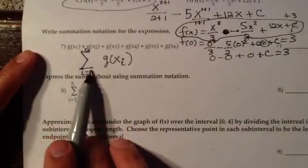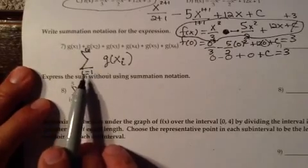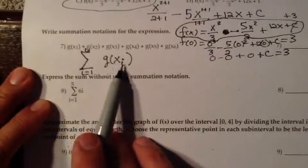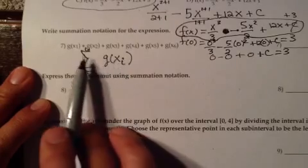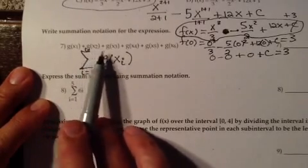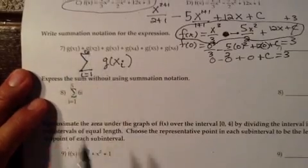Here's the Greek s for summation. i runs from 1 to 6, and we're summing up g x sub i's. If we fill in a 1, we get g x sub 1, and if we fill in a 2, we get g x sub 2, and so on. We're just practicing the notation.